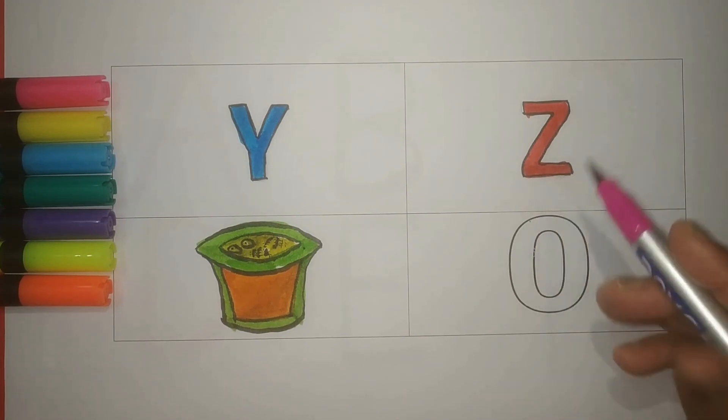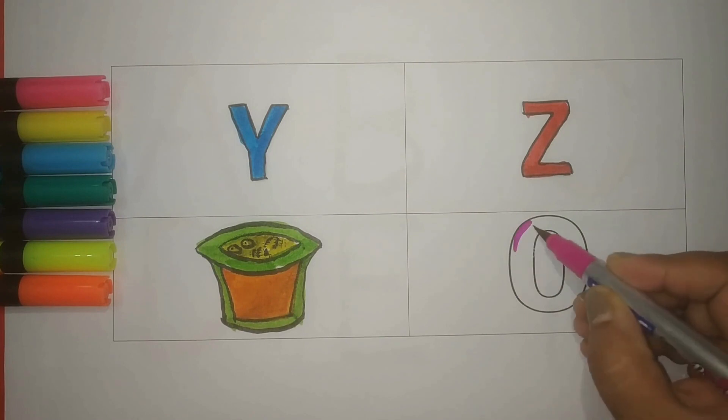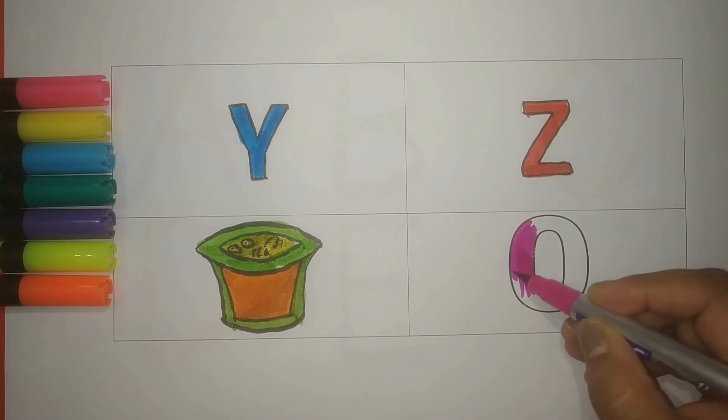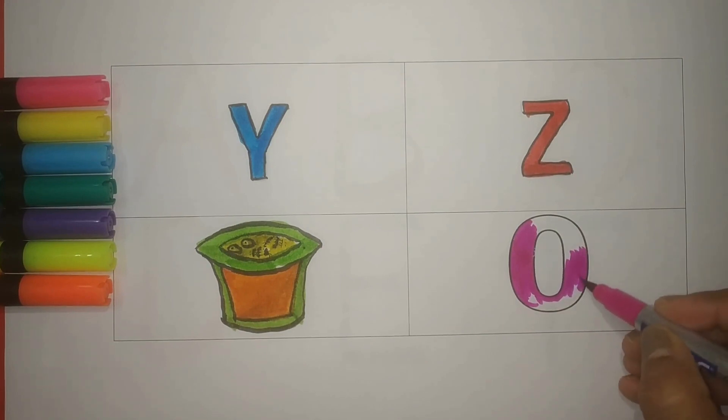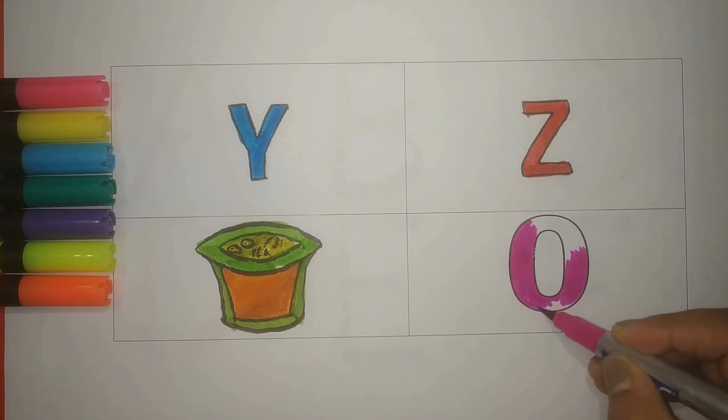Pink color, red. Zebra, Z for zero. Z for zero, Z for zoo. Z for zoo. Pink color.